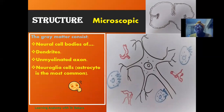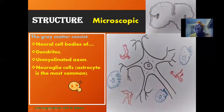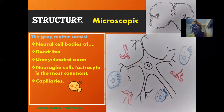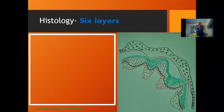Another structure seen within the cerebral cortex is the neuroglial cell, and the most abundant are the astrocytes. We also see capillary vessels, as the neurons need to be supplied with blood. These are the general structures we see within the cerebral cortex.